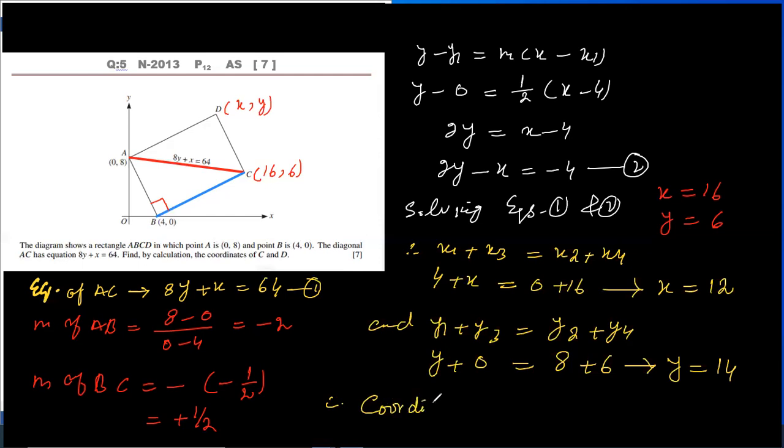Therefore, coordinates of D equals 12 comma 14. So this is the final answer. Coordinates of D equals 12, 14, and we have coordinates of C, 16, 6. In this way, this question has been solved. I hope that you will understand this.